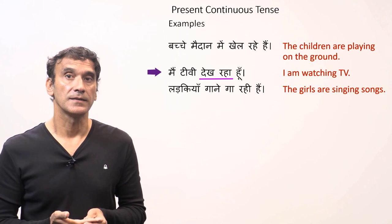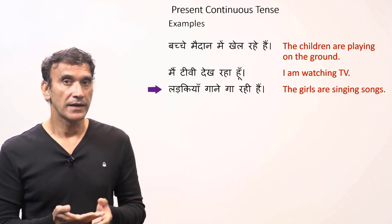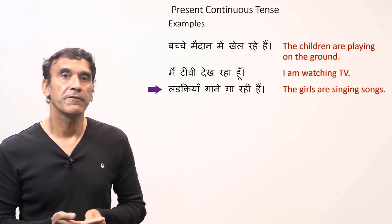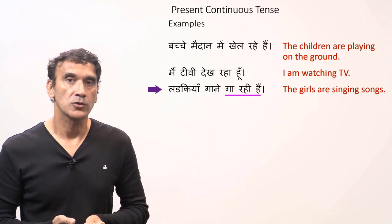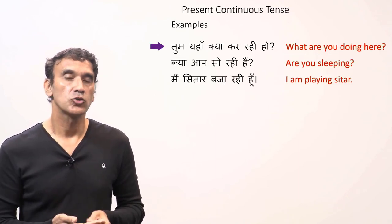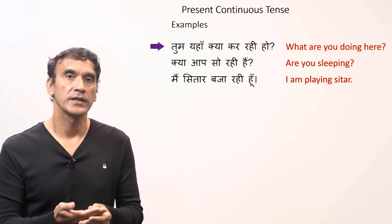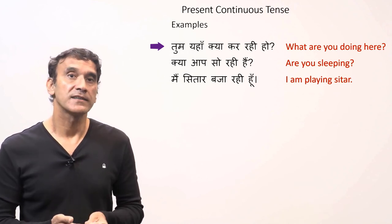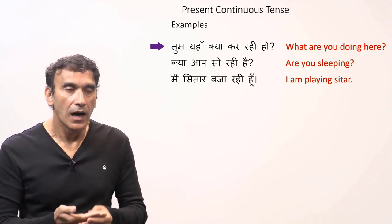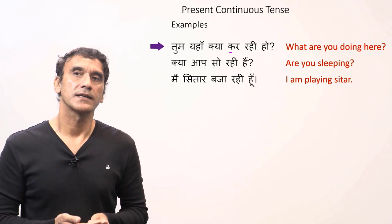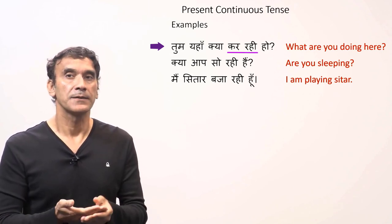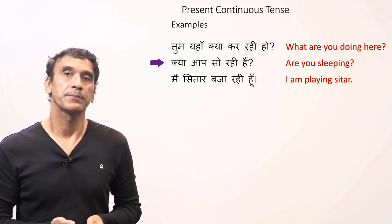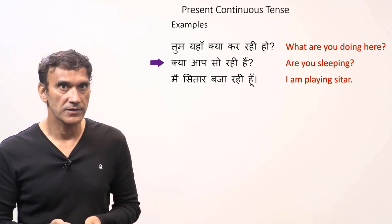'Main TV dekh raha hun' — I'm watching TV. Here a boy is saying this sentence, so the participle is masculine: 'dekh raha'. 'Ladkiyaan gaane ga rahi hain' — the girls are singing songs. 'Ladkiyaan' is feminine plural, so 'ga rahi hain' is used. 'Tum yahaan kya kar rahi ho?' — what are you doing here? A girl is being asked, which we can tell from the feminine participle 'kar rahi'.